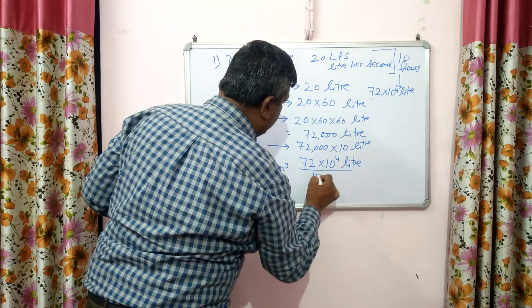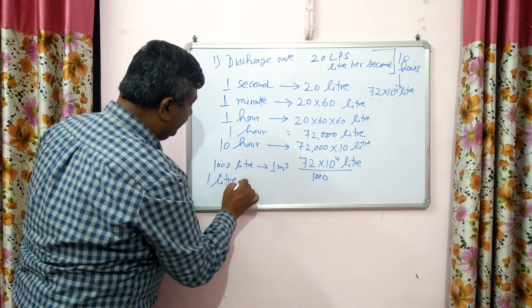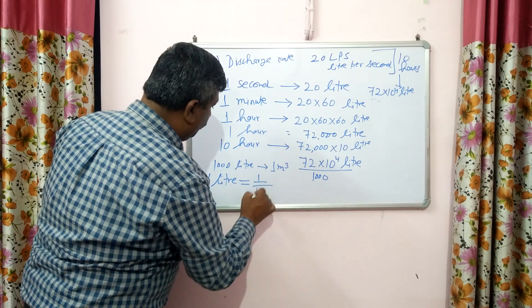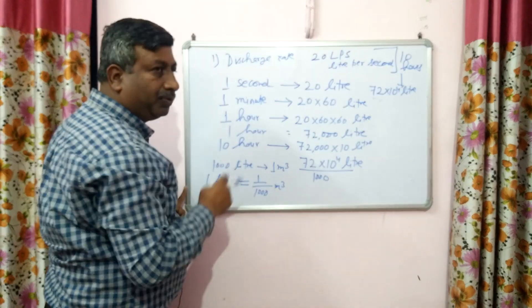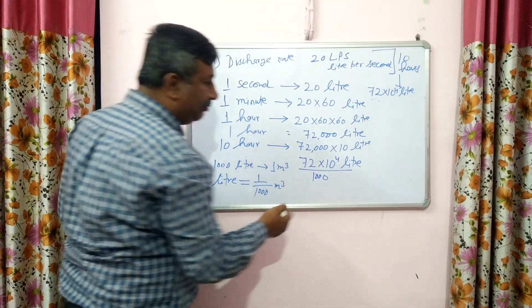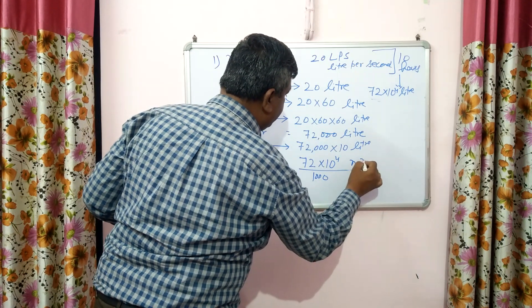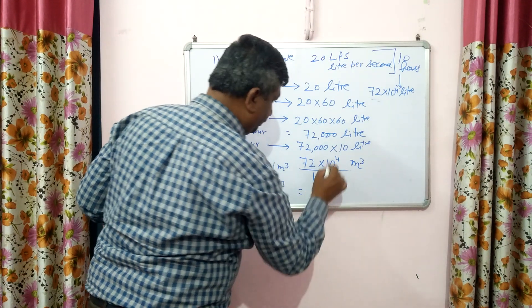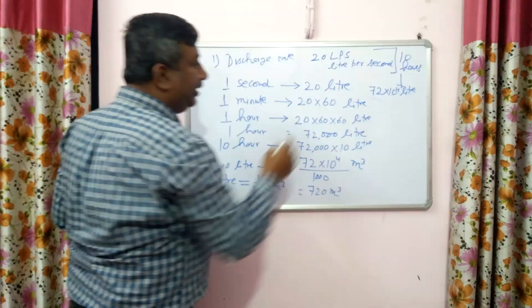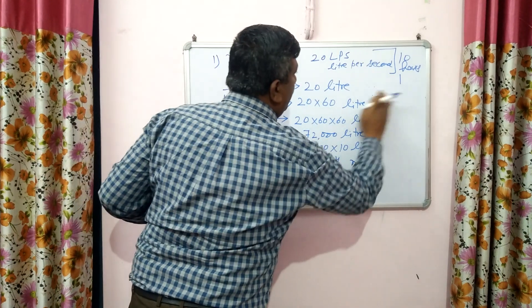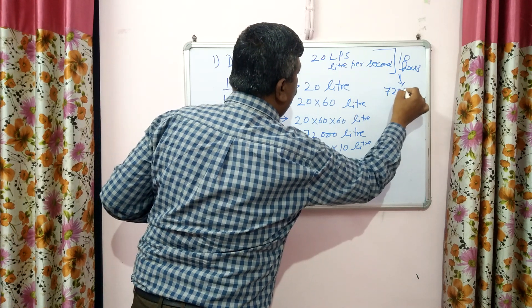1 litre equals 1/1000 cubic metres. So 72 × 10⁴ litres divided by 1000 gives 720 cubic metres. It means in 10 hours the volume of water is 720 cubic metres.